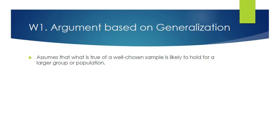The first kind of warrant — W1 — is an argument based on generalization. In this kind of argument, we're arguing that what is true of a well-chosen sample is likely to hold for a larger population, or that certain things consistent with the sample can be inferred about the group or population.